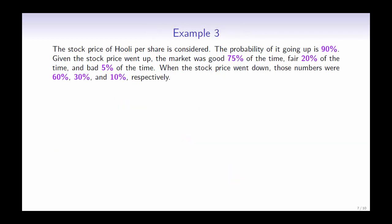Here is another example. Consider the stock price per share of Hooli. The probability of it going up is 90%. Given that the stock price went up, the market was good 75% of the time, fair 20% of the time, and bad 5% of the time. When the stock price went down, those numbers were 60%, 30%, and 10% respectively.